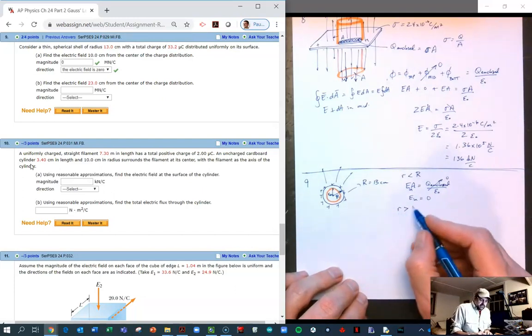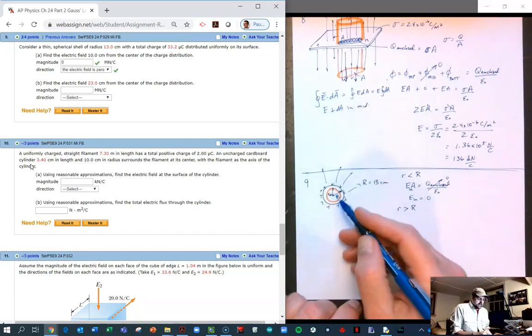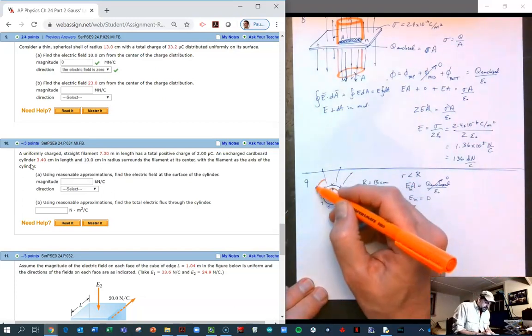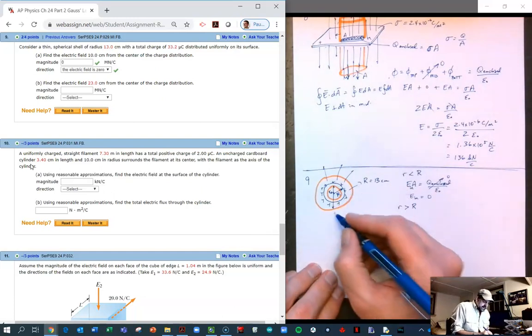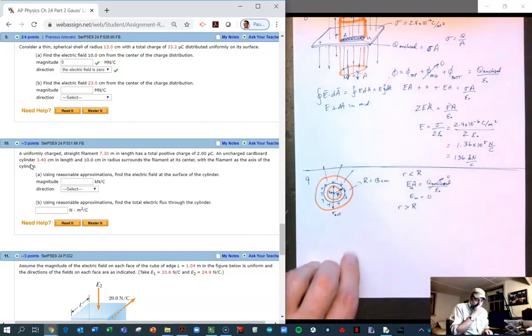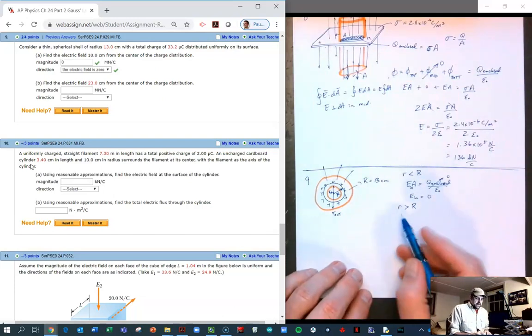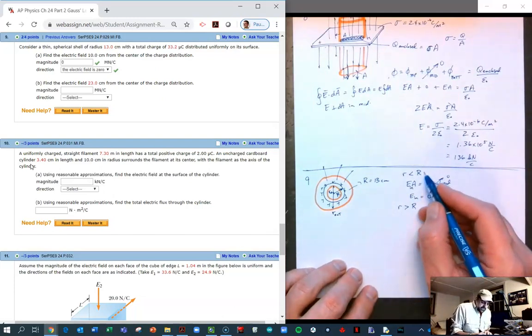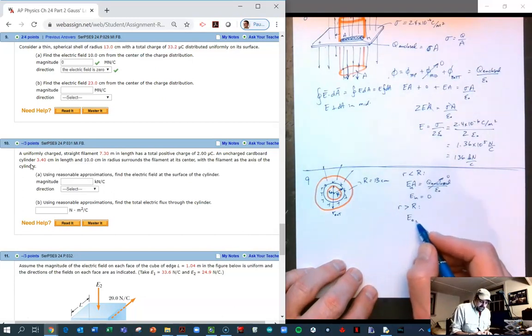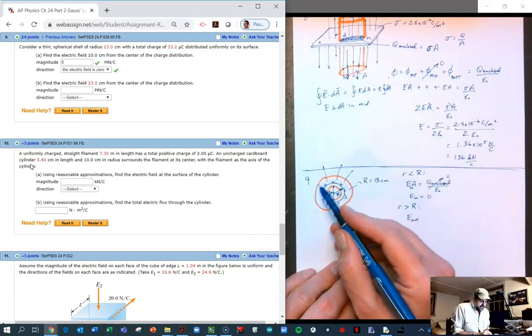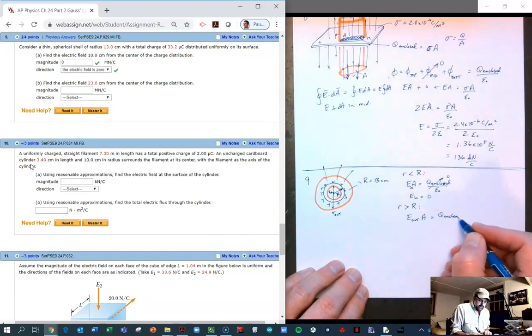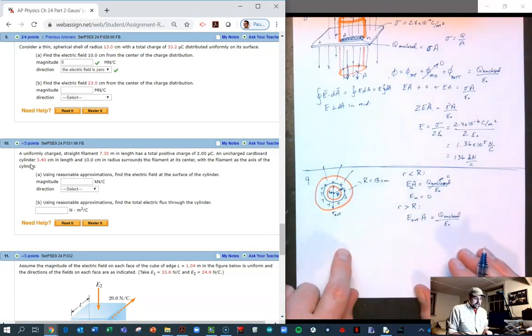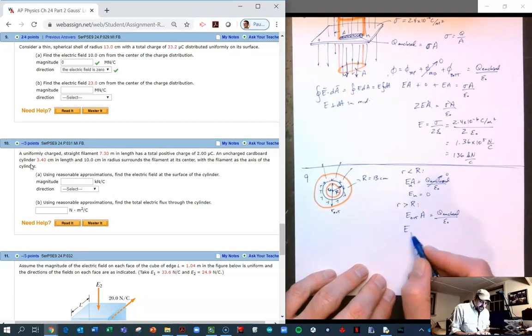The next part is what happens if you're outside the circle? What happens if the radius of your Gaussian circle is bigger than the radius of the conductor itself? Now our Gaussian surface is here, and we are going to look at when the radius of the Gaussian surface is going to be bigger than that big R. So let's look for what the electric field is on the outside. Just like before, the electric field times the area of our Gaussian surface is going to equal the charge enclosed divided by epsilon naught.